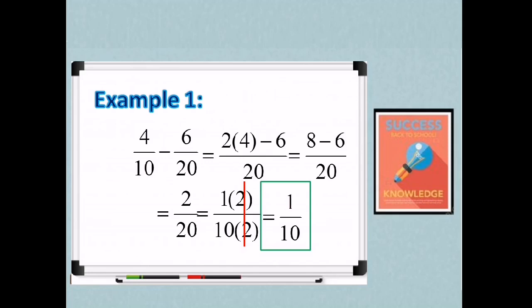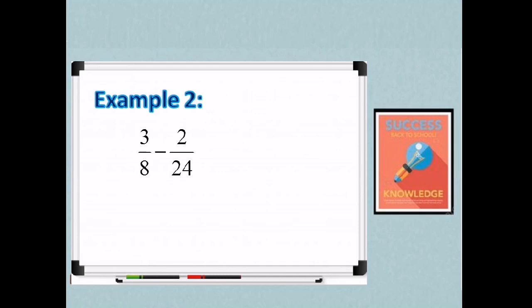For our last example, we have example 2. 3/8 minus 2 over 24. Our denominators are 8 and 24. So what do you think is our LCD? 24. So we just divide and then multiply. So 24 divides 8 is 3. Kaya yung i-multiply natin sa numerator na 3.